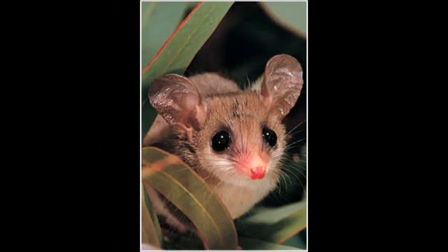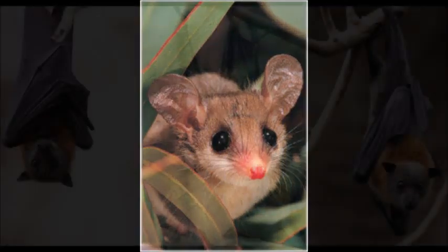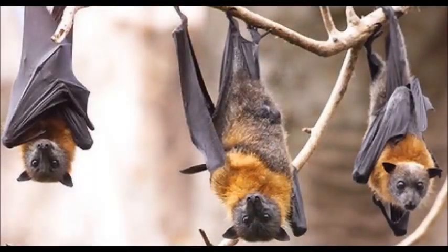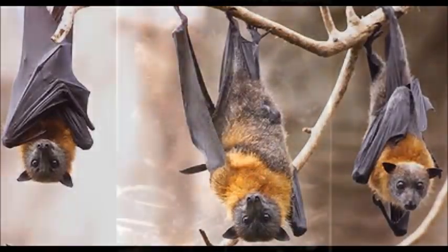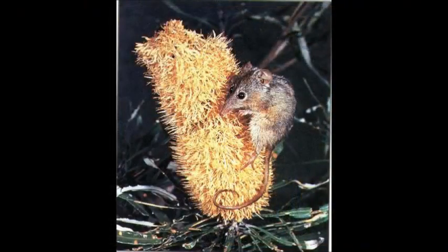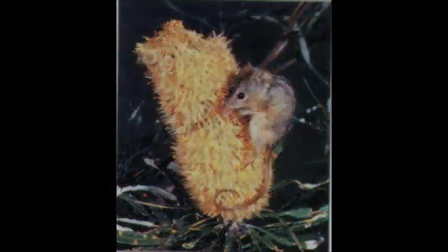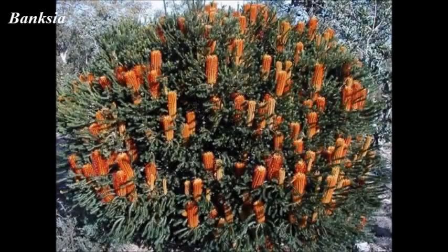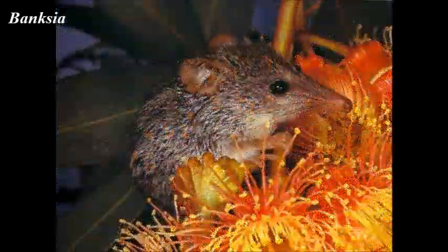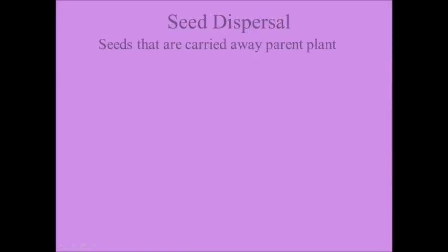Animals such as the tiny honey possum, bats, and rodents can contribute to pollination. The tiny honey possum uses their long snouts to grasp the nectar present in banksias.